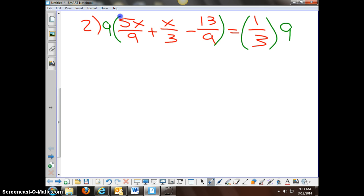So when you multiply 5x over 9 by 9, you get 5x. When you multiply x over 3 by 9, you get 3x. And when you multiply negative 13 ninths times 9, you get negative 13. And we're going to set that equal to one third times 9, which is 3.